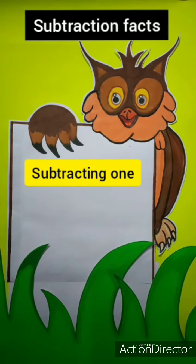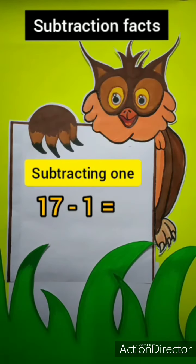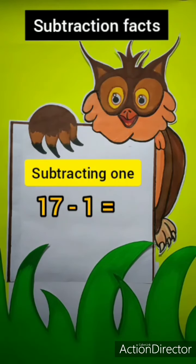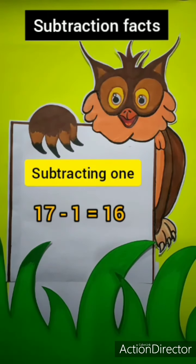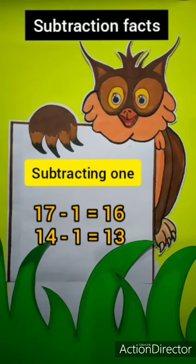The next subtraction fact is: when we subtract 1 from a number, the difference is the number that comes just before it. For example, 17 minus 1 — what is the number that comes just before 17? That's 16. So 17 minus 1 equals 16. Whenever we subtract 1 from any number, we get the number before. So 14 minus 1 equals 13.